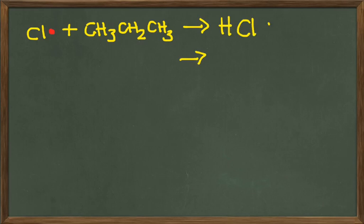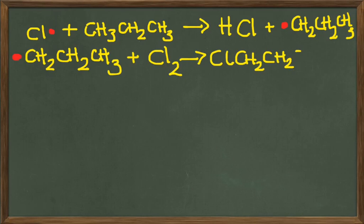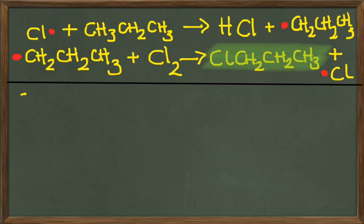So a chlorine radical made in an initiation step reacts with the propane to make hydrochloric acid and the propyl radical.